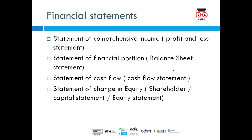In financial accounting, we have four types of financial statements. First is the Statement of Comprehensive Income, also known as the income statement or profit and loss account — where all income and expenses are recorded. Second is the Statement of Financial Position, also known as the balance sheet — where we record our assets, liabilities, and capital. Third is the Statement of Cash Flow, which records how much money comes in and goes out of the business.